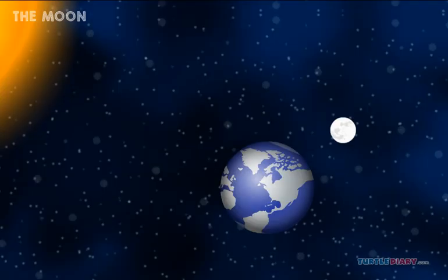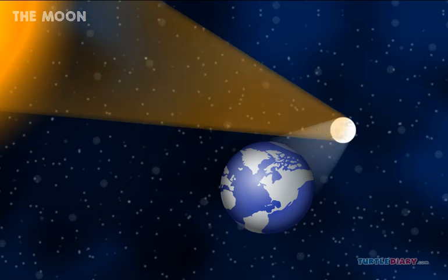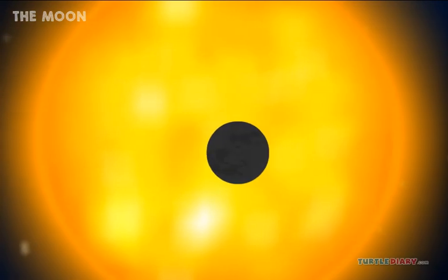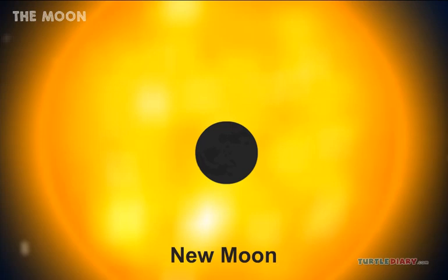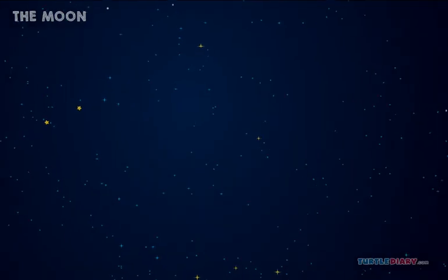Remember that the Moon only reflects the light of the Sun. So, when the Sun is behind the Moon, we can't see it at all. We call this a New Moon. The night is very dark.